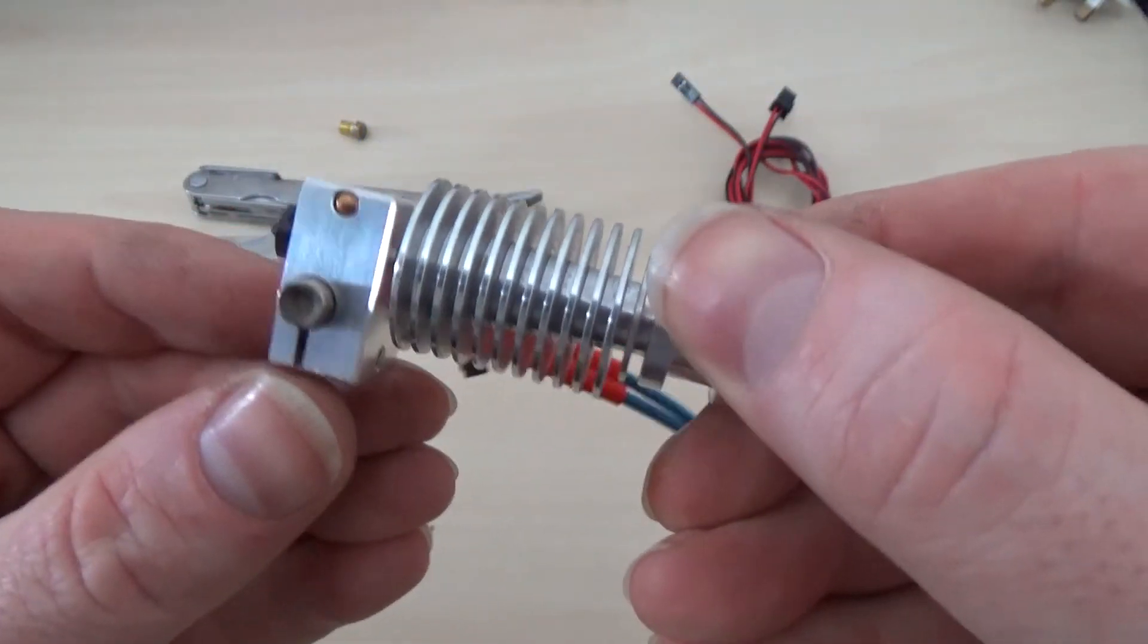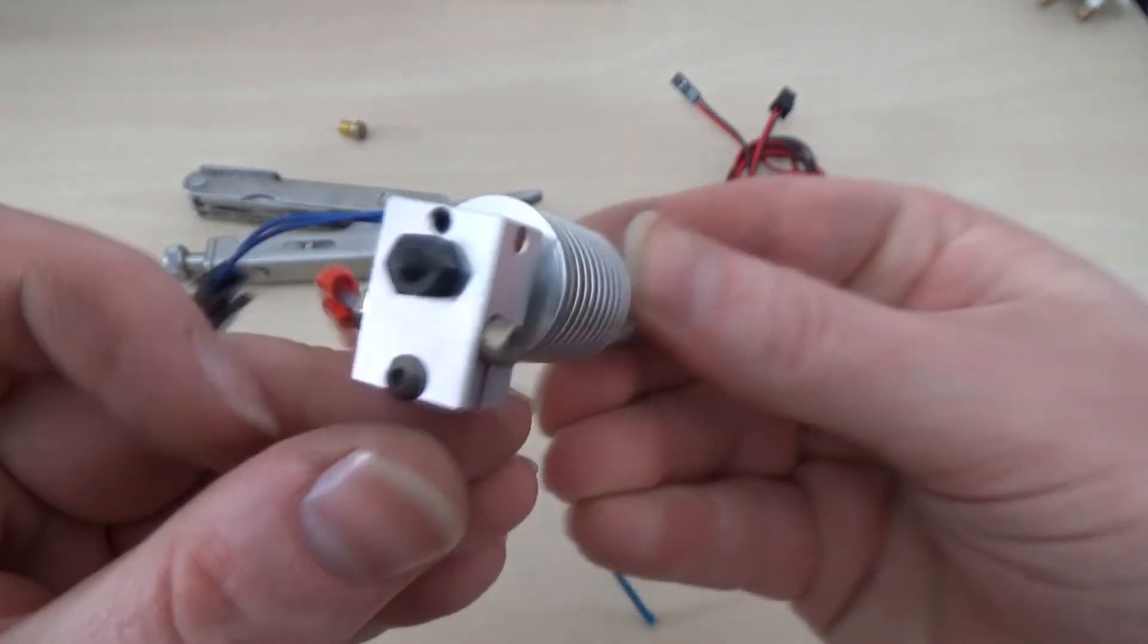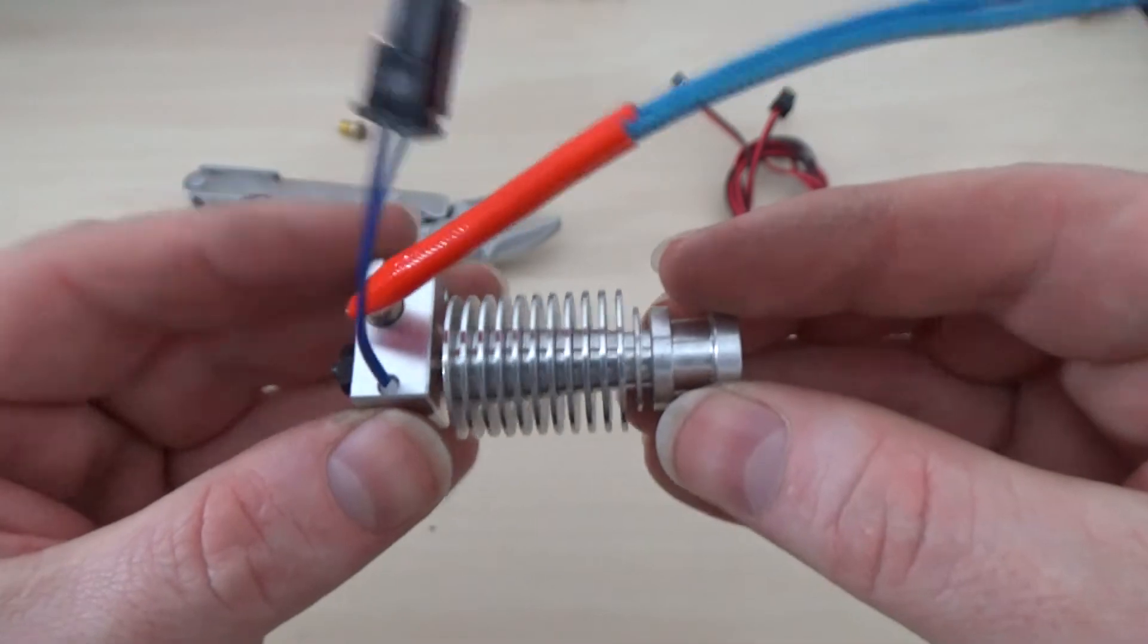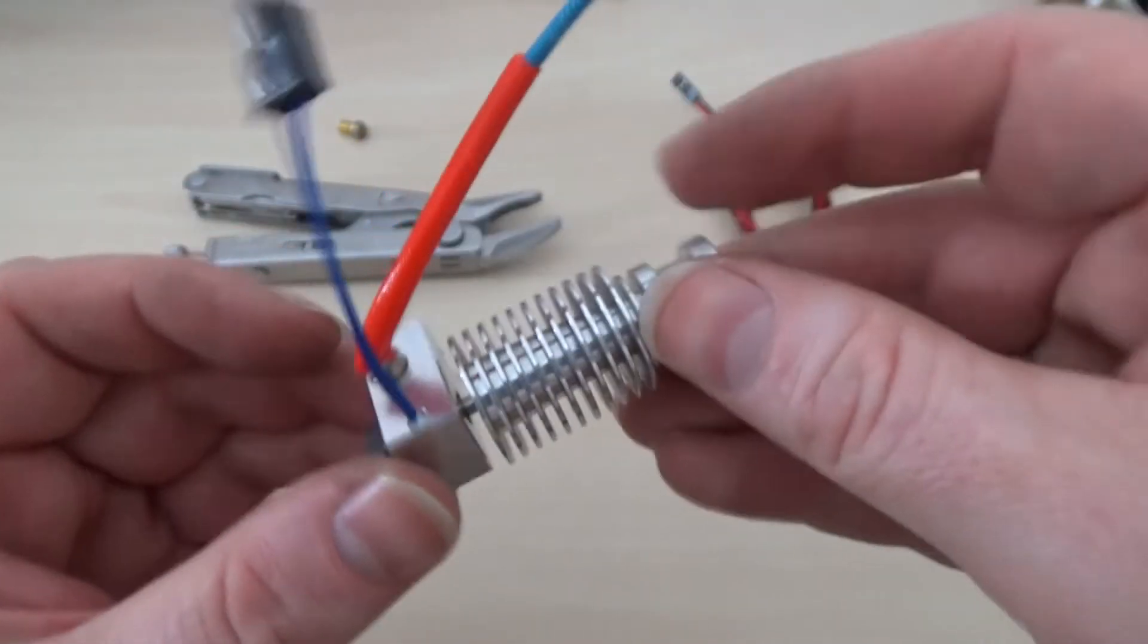That's what it looks like when it's finished. It was really easy to do. I'll give it a quick spin around so you can see. There you go. Well, wasn't that nice and easy to do? So much easier than those glass beaded thermistors. And if you want to see what it looks like with the fan shroud reattached, there you go.